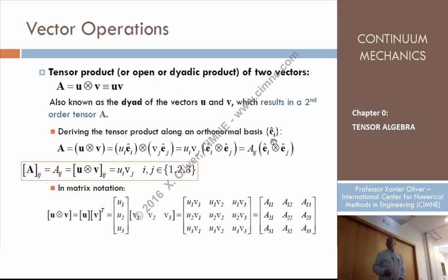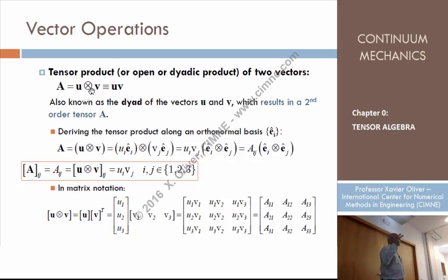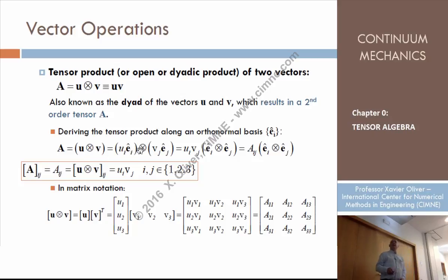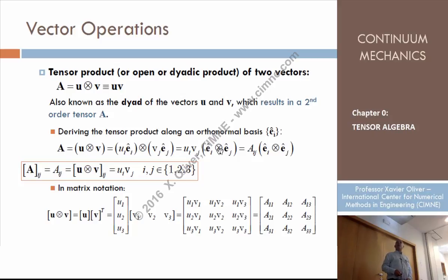How do we define the tensor product? We use what we called the second-order tensor basis. The tensor product U times V, where U is UI times EI and V is VJ times EJ, gives — with scalars coming outside — a combination of the second-order basis constructed in terms of the chosen Cartesian basis. So these are the components of a second-order tensor whose component IJ is UI times VJ.